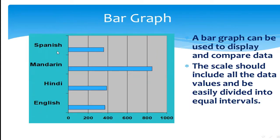On the vertical axis, language names are written — it can be Spanish, French, Arabic, any language given. Now if I want to compare how many students spoke English and Hindi: English is about 200, this one is about 350, and Hindi is around 375. So you can see Hindi is spoken a little more than English.